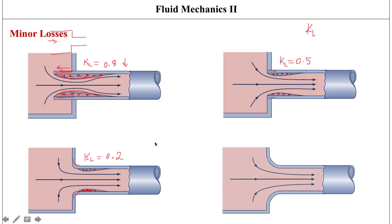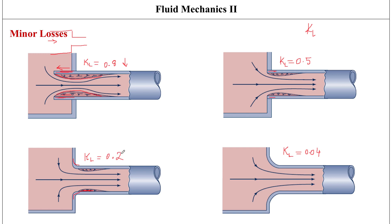We can keep improving this further. The more well-rounded the entrance is, the lower the loss coefficient. A well-rounded entrance can bring KL down to as low as 0.04. However, in practical applications, it's not always just about achieving the lowest loss coefficient — the cost of fabricating these components must also be considered. There has to be a give and take between low head loss and keeping manufacturing costs manageable.